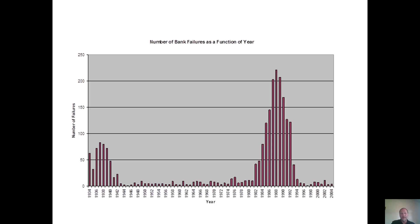This graph shows the number of bank failures as a function of year. In the 1930s we have all the bank failures associated with the Great Depression — at that point banks were allowed to borrow money from depositors and invest it in the stock market. Since the stock market crashed, not only did the banks go bankrupt but many individuals did too, essentially having stock market investments at 90% leverage with only 10% equity. Any significant stock market crash destroys a lot of banks. That resulted in the passage of the Glass-Steagall Law, which split investment banking from commercial banking.